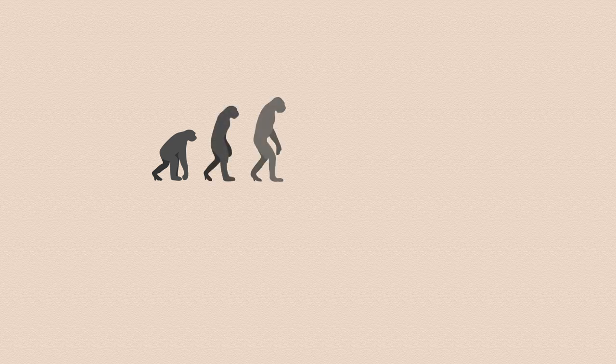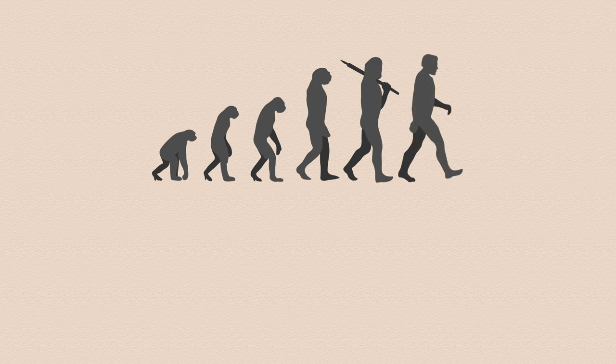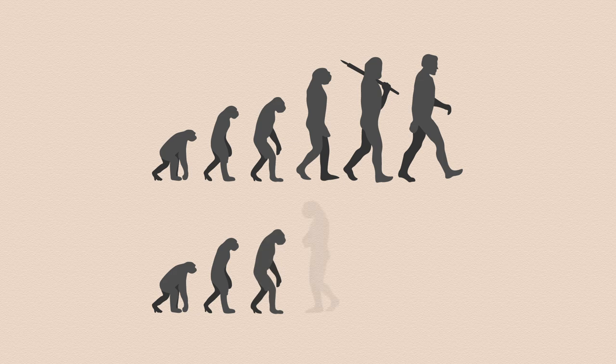It is always tempting to imagine evolution as linear, constantly progressing towards some final form. With that, living fossils appear as though a kind of evolutionary Luddite, stubbornly refusing to adapt to a changing world. Evolution is of course not linear, and is often not predictable.